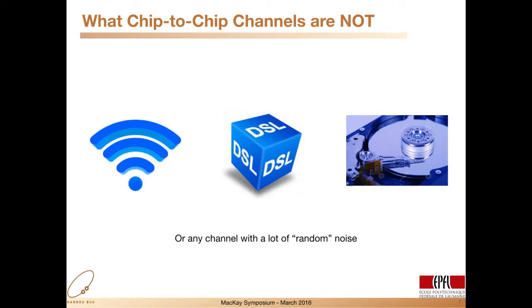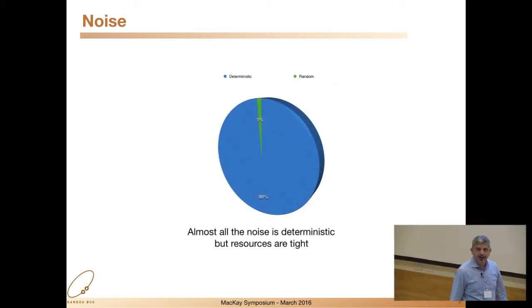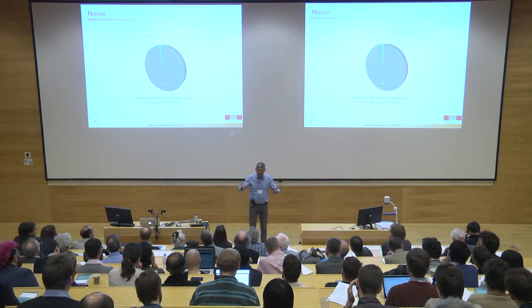Information theory lies at the core of wireless transmission, for example. It lies at the core of DSL or magnetic disk drives. The issue is that the channels we see in chip to chip communication is none of that. Most of these channels suffer from what is called random noise. In chip to chip, you have a very different situation. If you lump the various noise types together, almost 99% of it is deterministic. You actually know about that noise beforehand. Before you send the data, you know exactly how the data is going to be distorted when it reaches the other side.